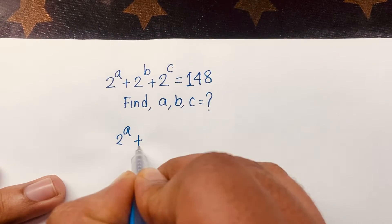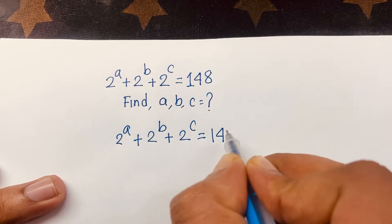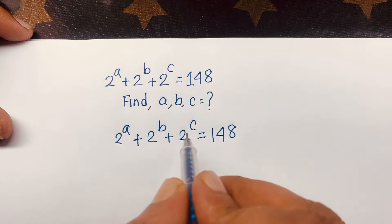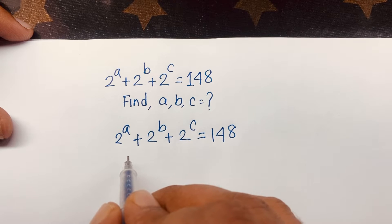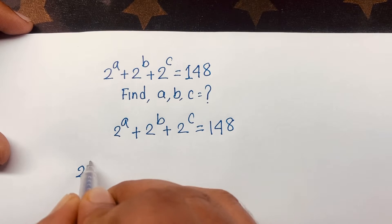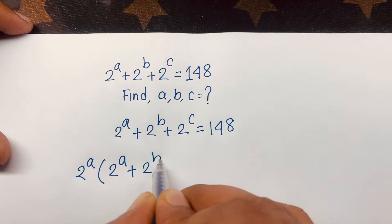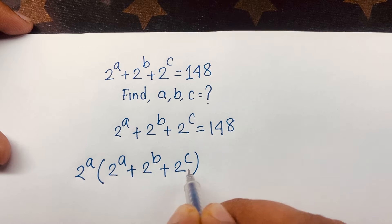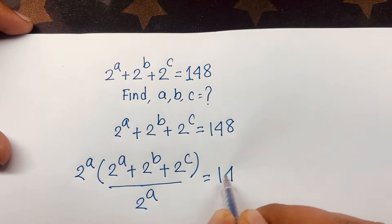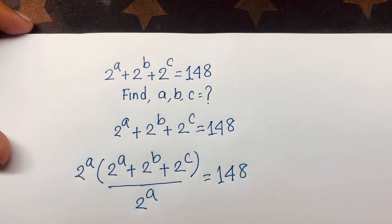Our question is 2^a + 2^b + 2^c = 148. I will multiply the left side by 2^a and again divide by 2^a. So I can write: 2^a times (2^a + 2^b + 2^c) divided by 2^a is equal to 148.